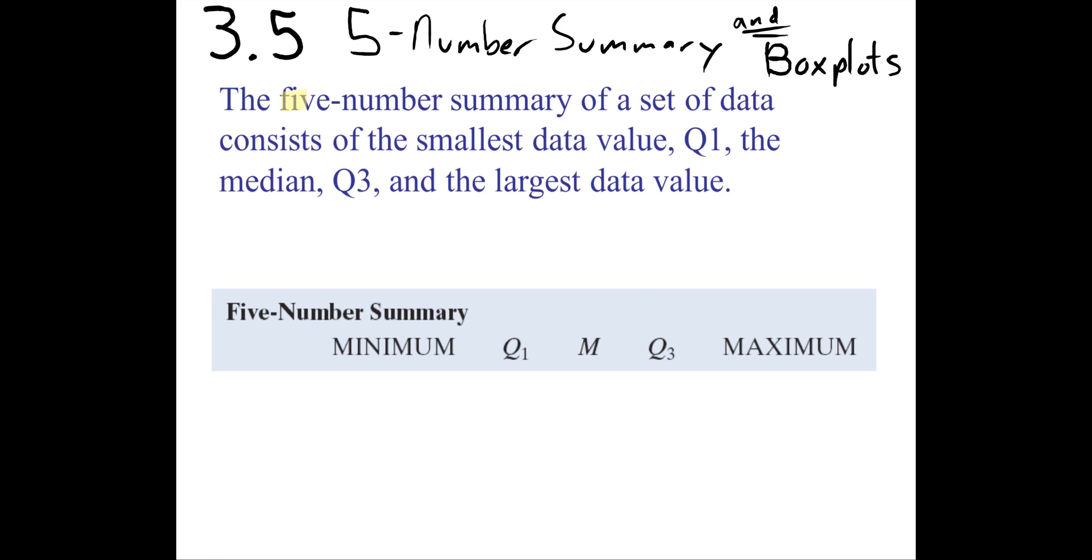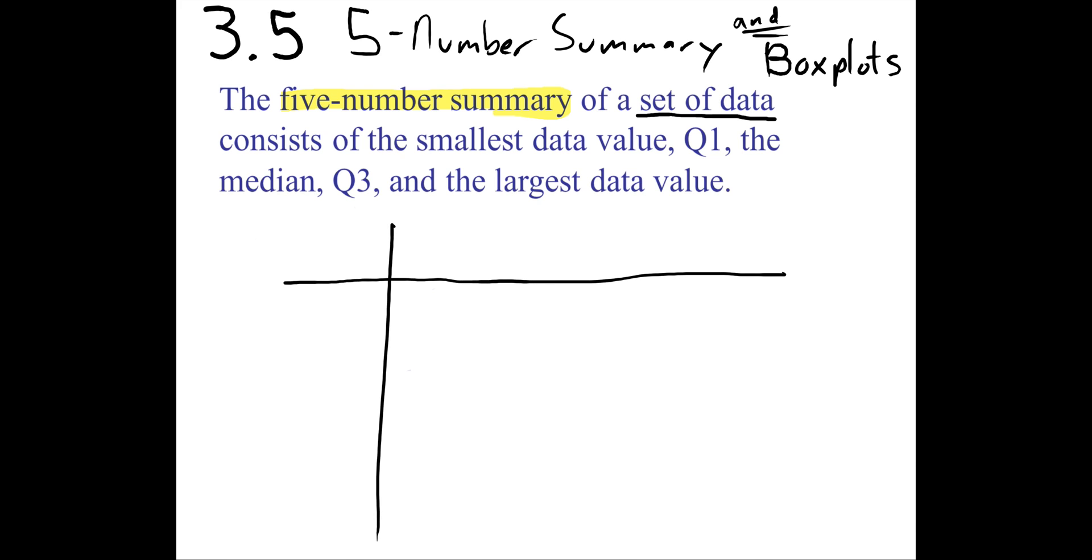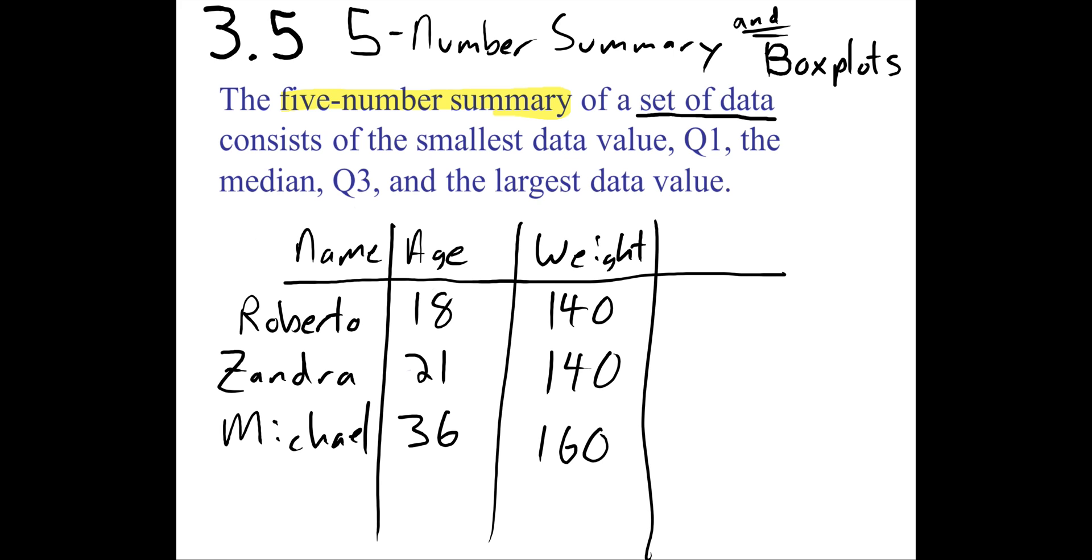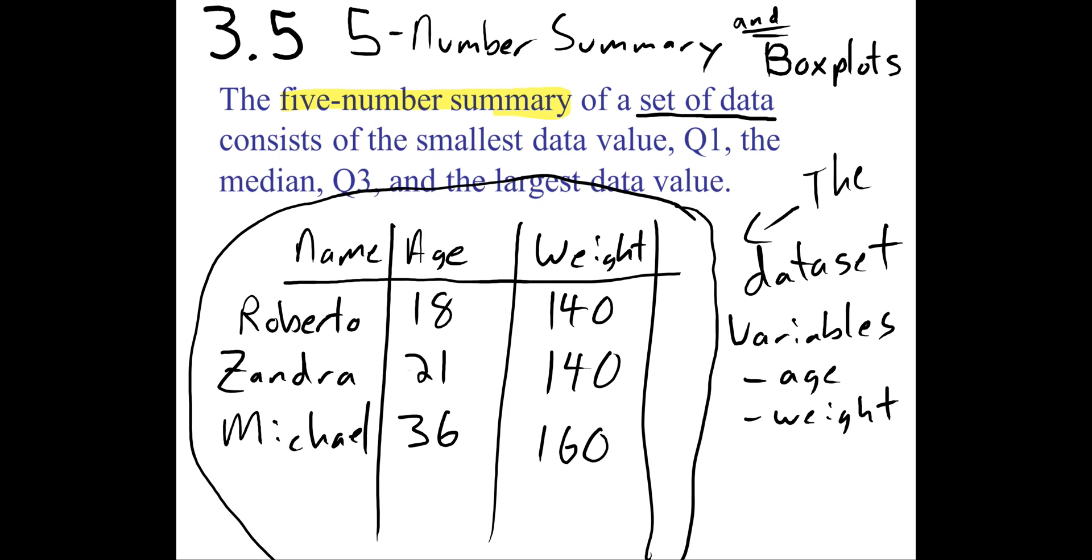The five-number summary is a way to talk about your data. I'm not a huge fan of calling the five-number summary a way to describe a set of data, because I could have a data set here that has two quantitative variables, say age and weight. With these two quantitative variables, we might want to summarize either one of them using the five-number summary. Just to get the terminology right, this entire thing is the data set, and I have two variables there. They're both quantitative, and I might want to summarize what's going on with these variables using the five-number summary.